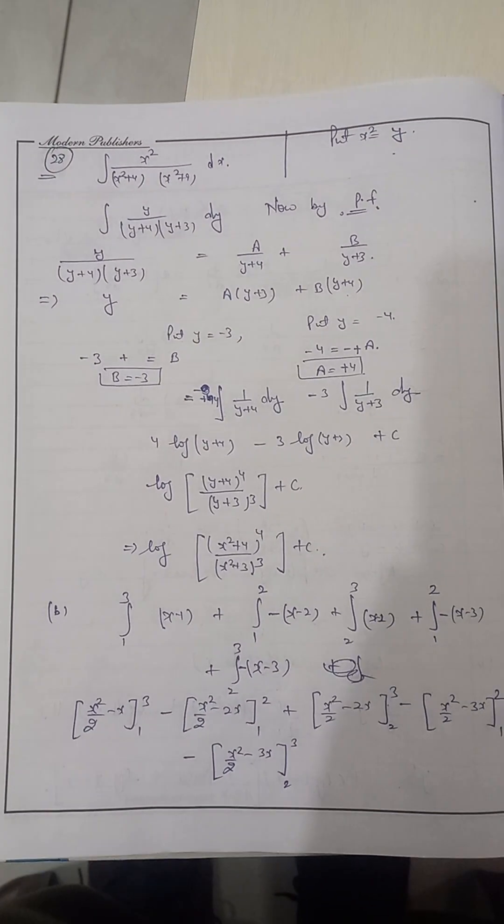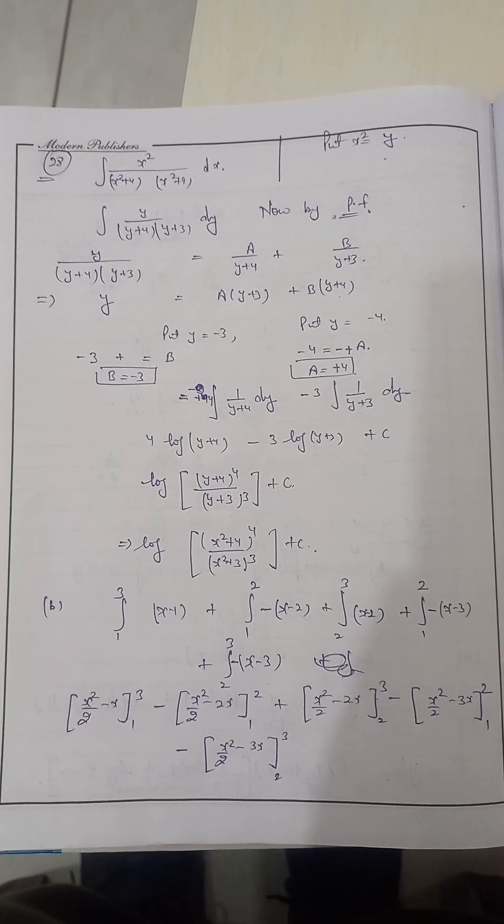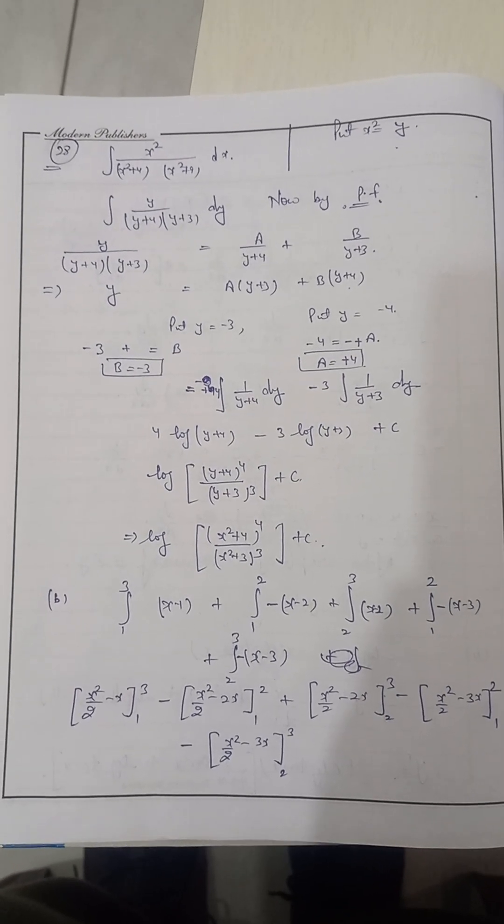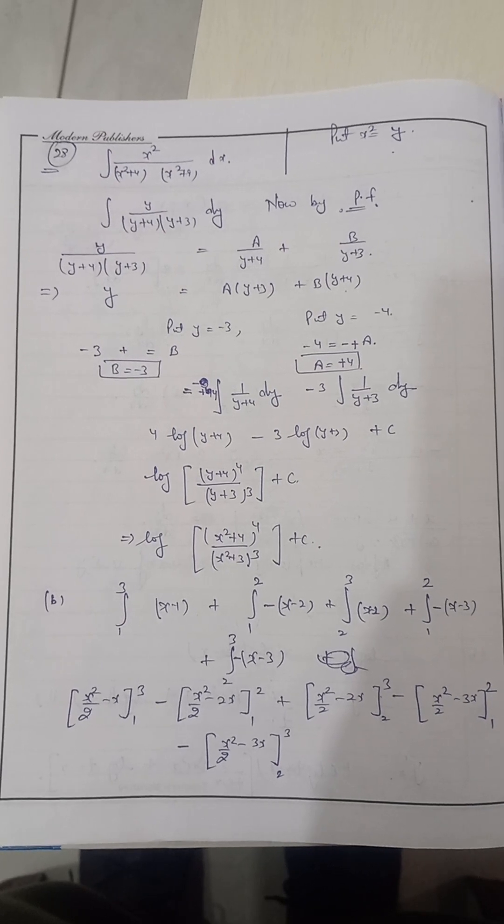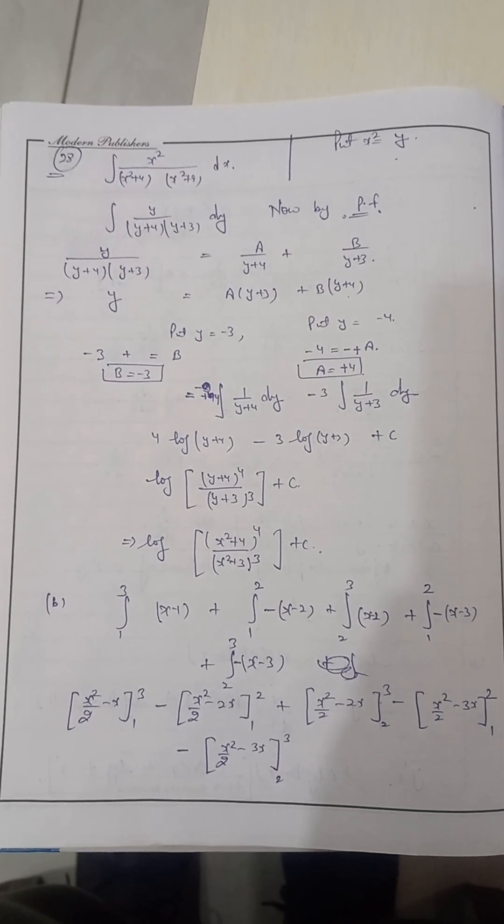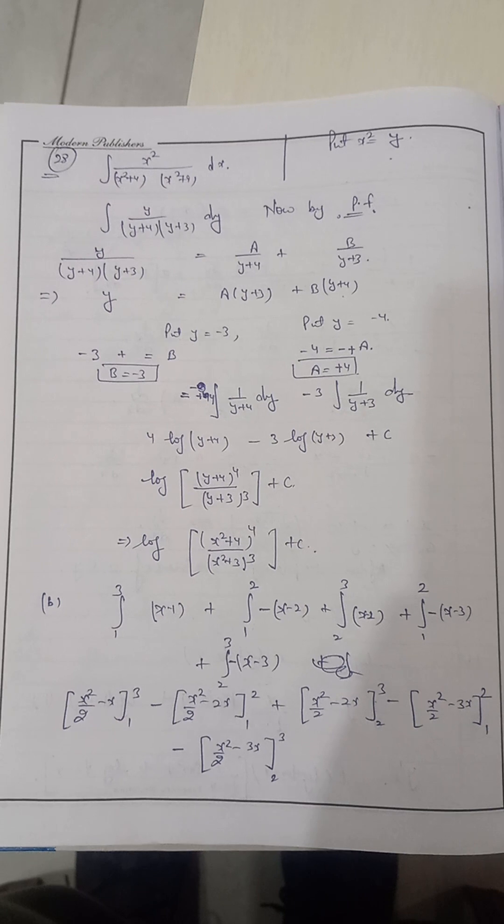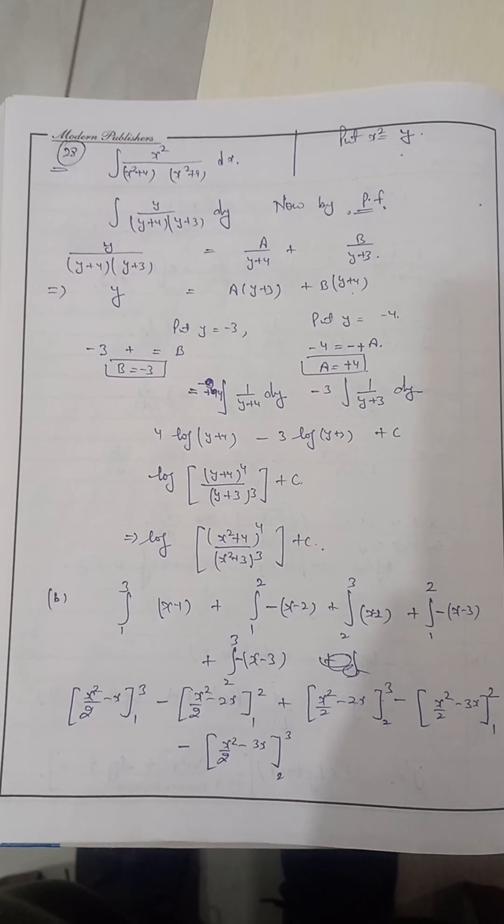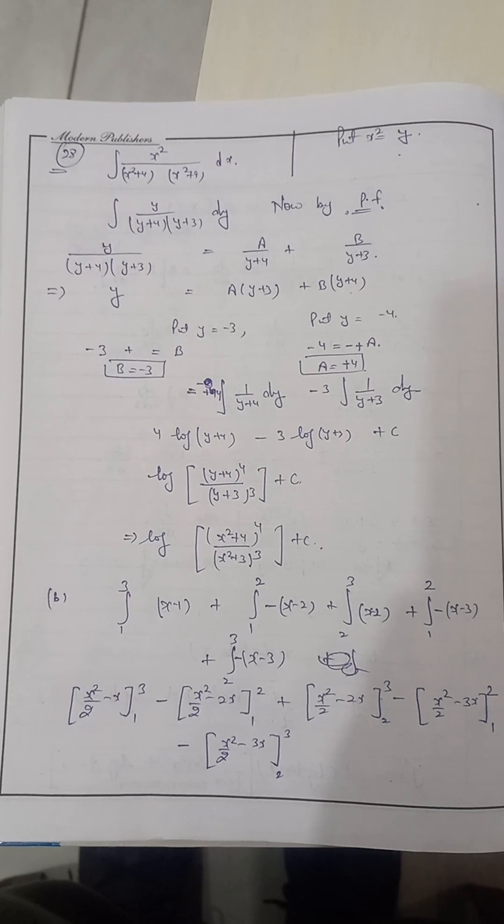28th question is from my favorite topic that is partial fraction. So this is again an NCRT question. So what they have done in this question x square upon x square plus 4 x square plus 9 dx. So I just replace, don't let it as a value substitute. I just replace x by y.